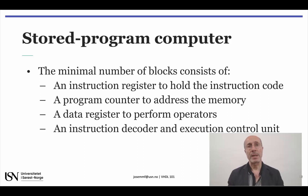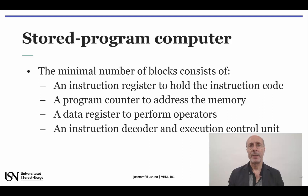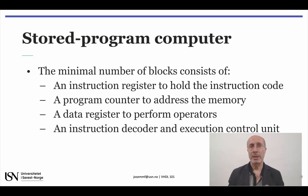The CPU fetches an instruction code from memory and decodes the corresponding operation. It then fetches data, if needed. The operation is performed. And finally, the result is stored back into memory, if needed. This means that a CPU must comprise an instruction register to hold the instruction code, a program counter to generate the memory addresses, at least one data register to perform an operation, and finally an instruction decoder and execution control unit.